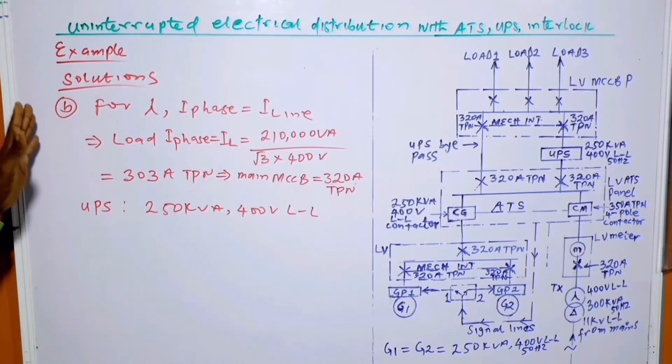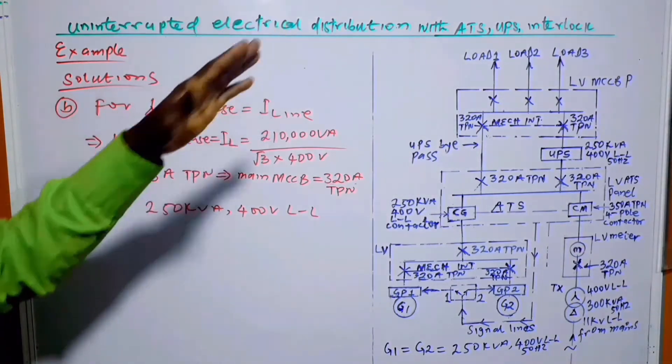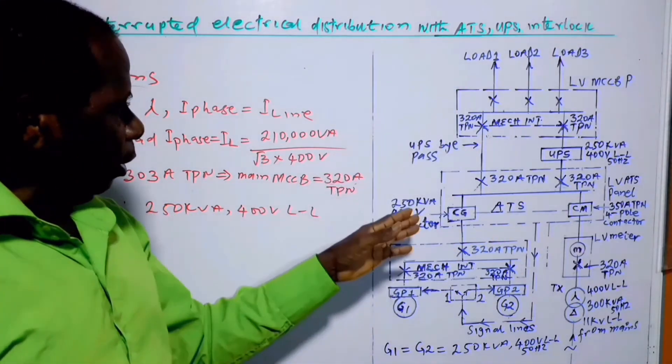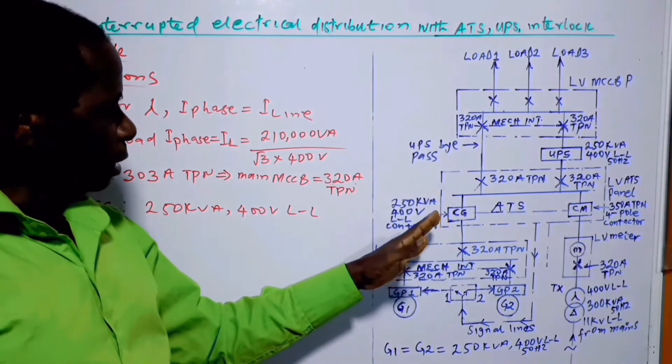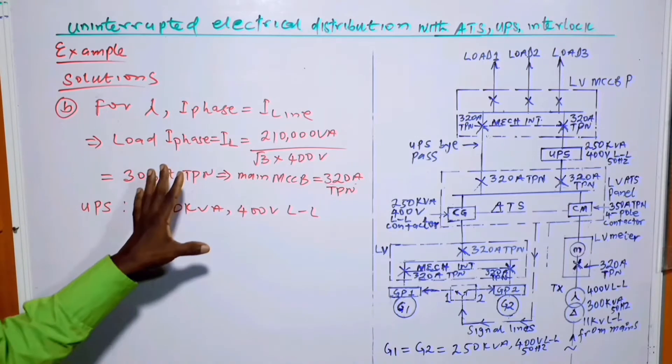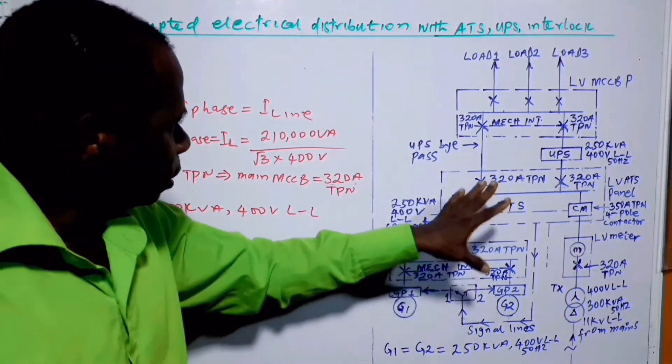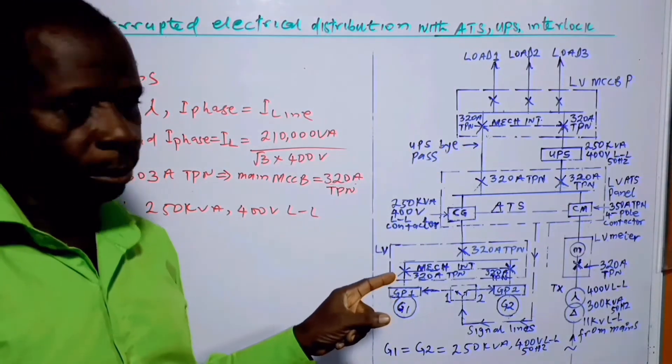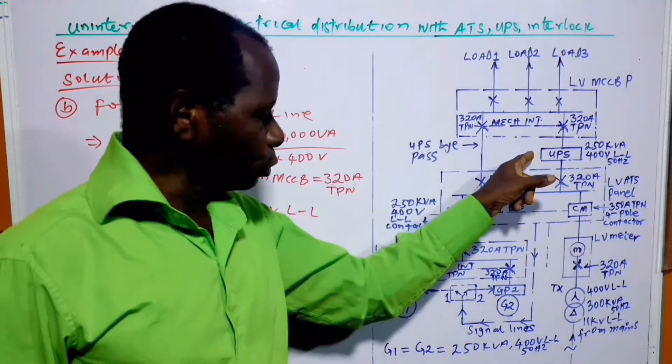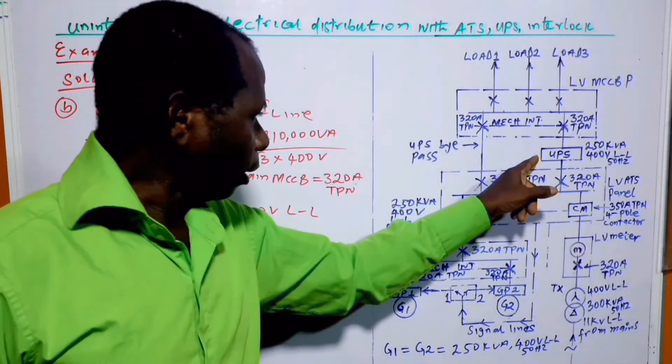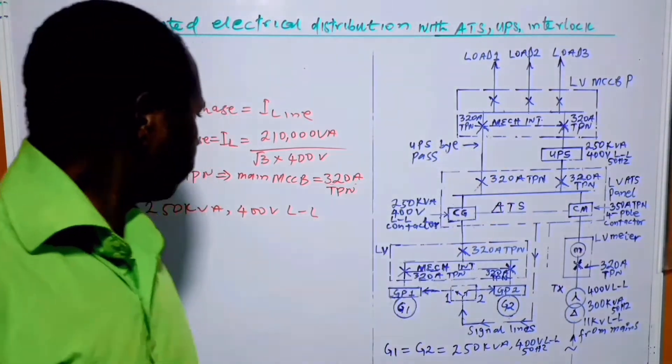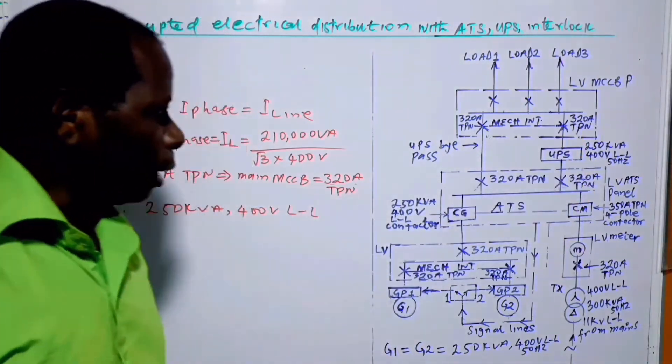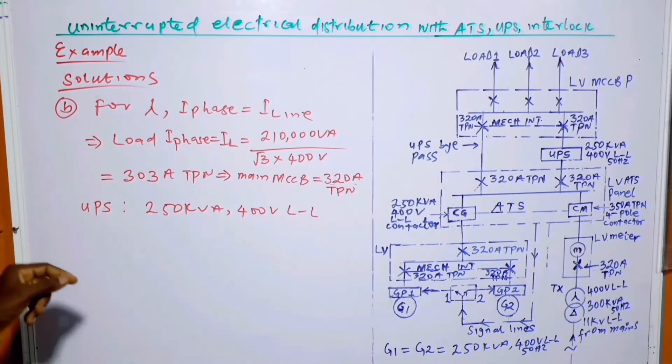Now, the solution to part B. In order for us to be able to sketch, I mean to draw the uninterrupted schematic diagram for the hotel, we need to know certain things. The first thing is that since the schematic diagram is going to be uninterrupted, then we have to introduce UPS. So the size of that one is also equal to 250kVA.